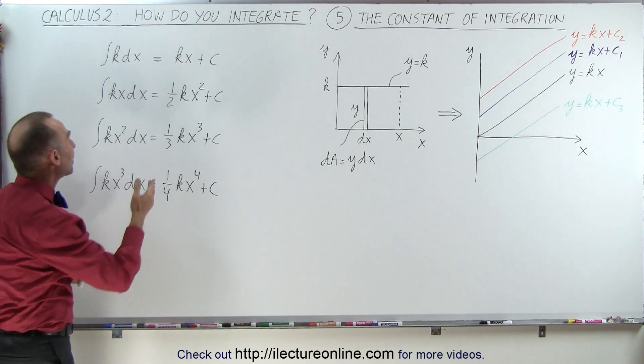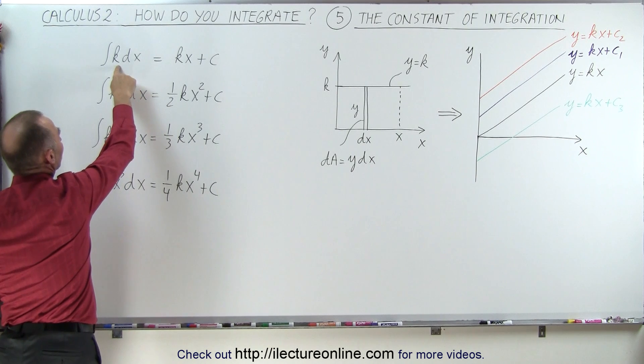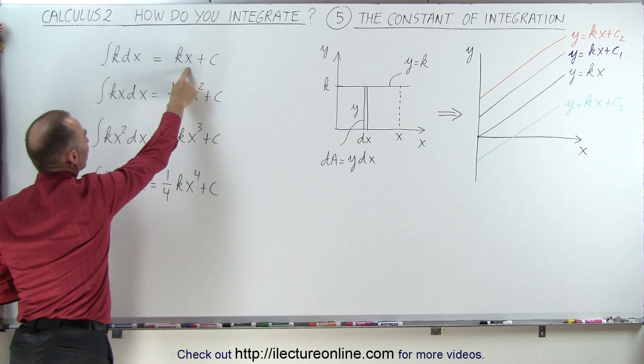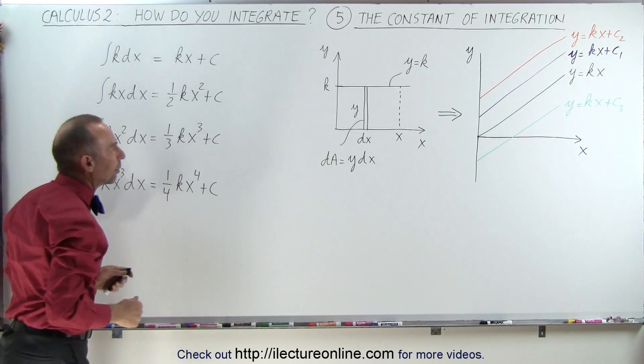So it looks like whenever we take the integral of a simple monomial with the variable x, when we start with x to the zero power, we end up with x to the first power. When we start with x to the first power, we end up with x to the second power.